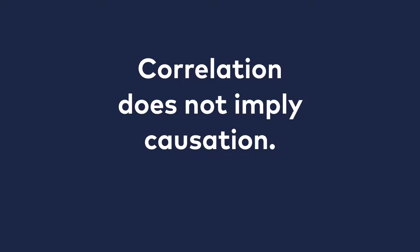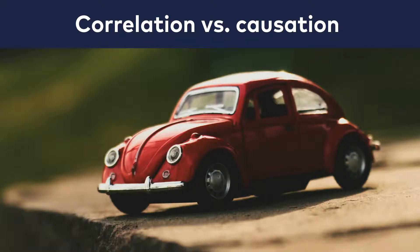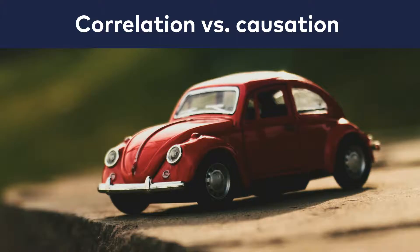Here are a few more examples of the correlation versus causation issue. Have you ever heard that red cars get involved in more accidents than cars of any other color? That's what statistics shows, and some people draw the conclusion that the color red is too vibrant and makes people drive more aggressively. But isn't it also possible that more aggressive drivers choose red cars in the first place? There is a correlation, but we don't know exactly what's the cause and what's the effect.